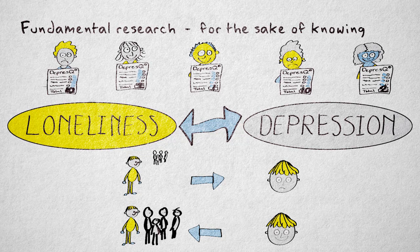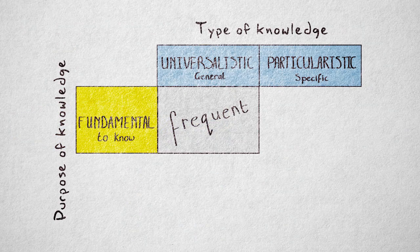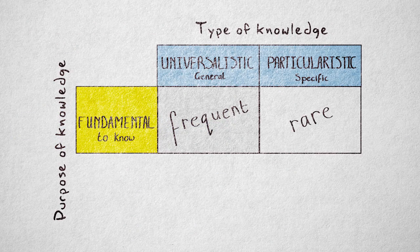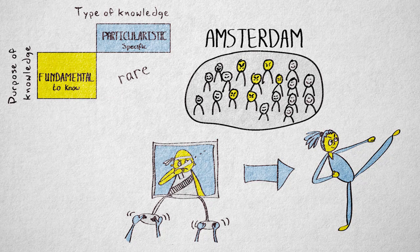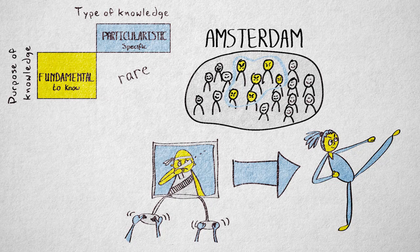Most fundamental research is universalistic, but in some cases fundamental research can be particularistic — for example, when research is done in a very specific setting. We could investigate the relation between playing violent computer games and aggressive behavior in a very specific group of young delinquent first offenders in Amsterdam who all come from privileged backgrounds. This very specific problem group could provide interesting new insight into the relation between violent gameplay and aggression.